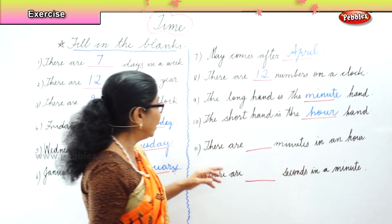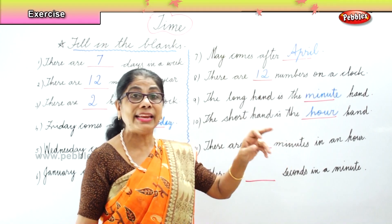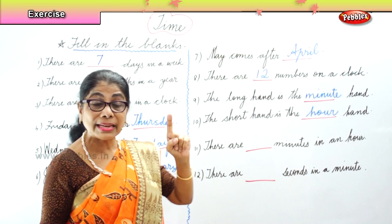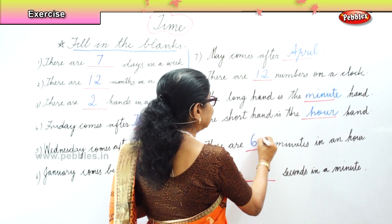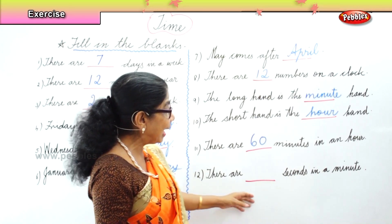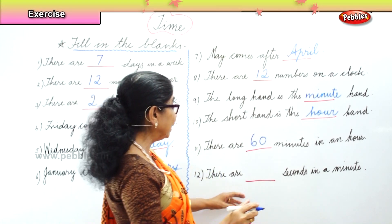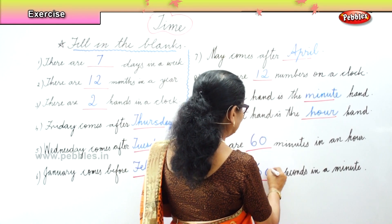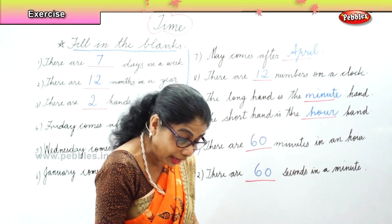Then, there are dash minutes in one hour — how many minutes are there in one hour? Sixty minutes in one hour. And there are dash seconds in one minute — how many seconds? Sixty seconds. Okay, let's look at all the fill-ups that we have done.